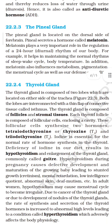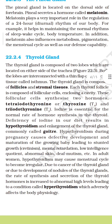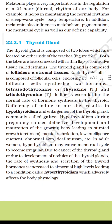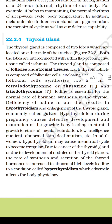The pineal gland is located on the dorsal side of the forebrain. Pineal cells secrete a hormone called melatonin. Melatonin plays a very important role in regulation of the 24-hour diurnal rhythm of the body — for example, it helps in maintaining the normal rhythm of the sleep-wake cycle and body temperature. In addition, melatonin also influences metabolism, pigmentation, menstrual cycle, and our defence capability.